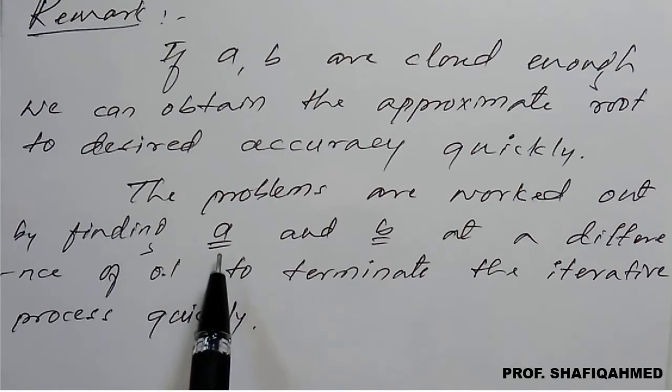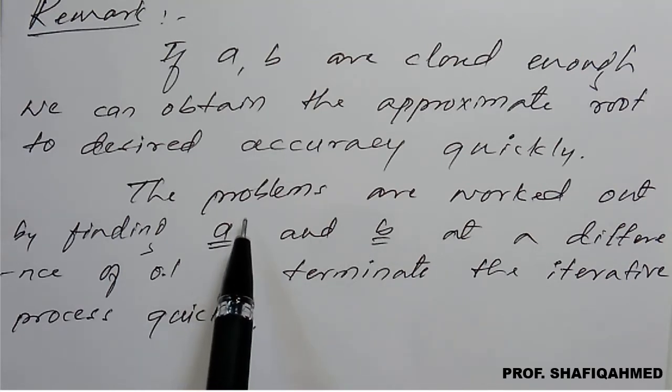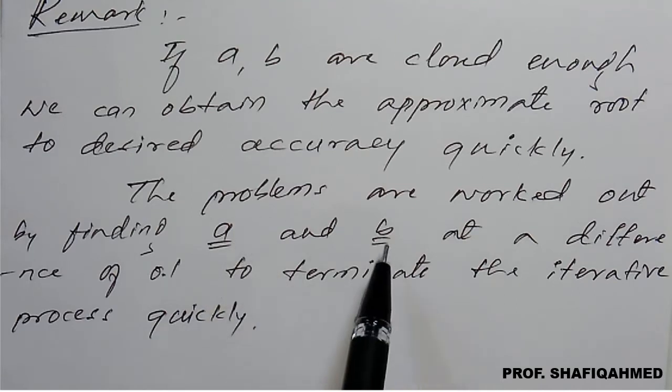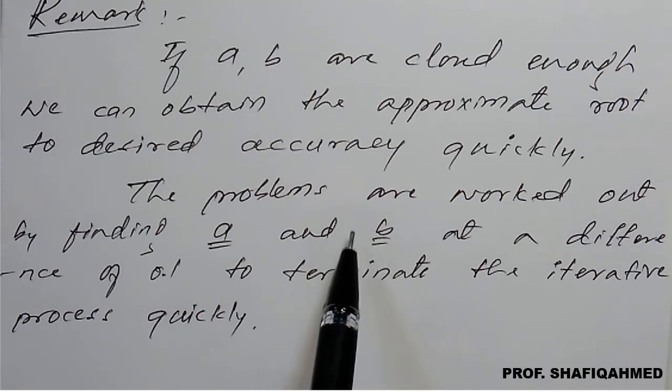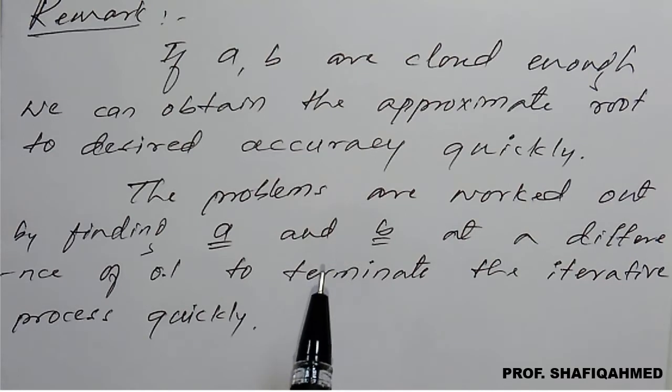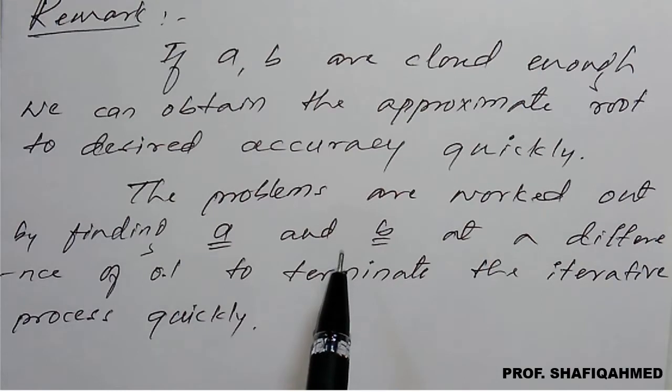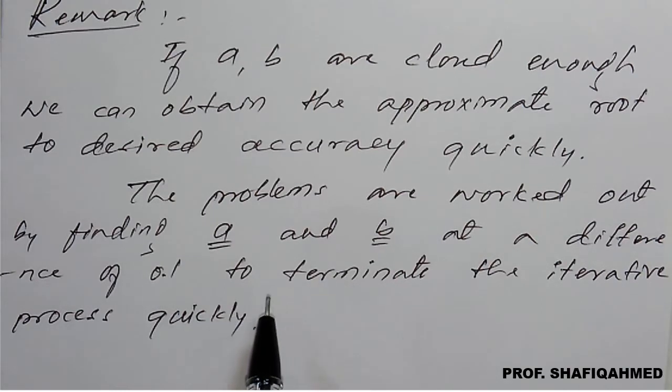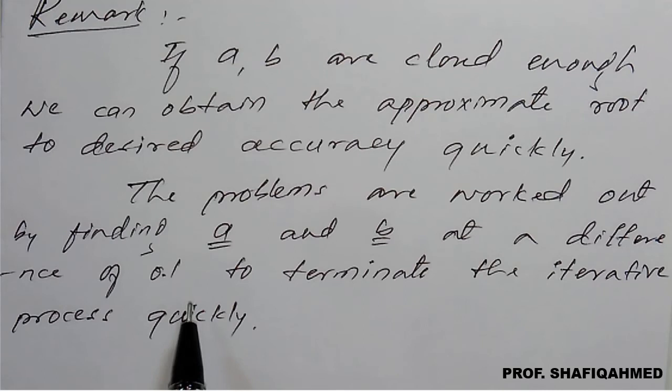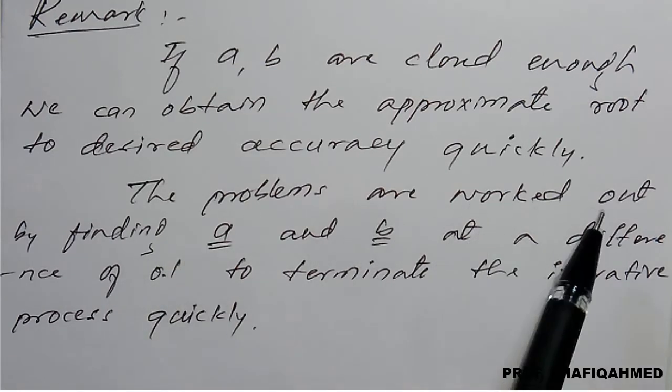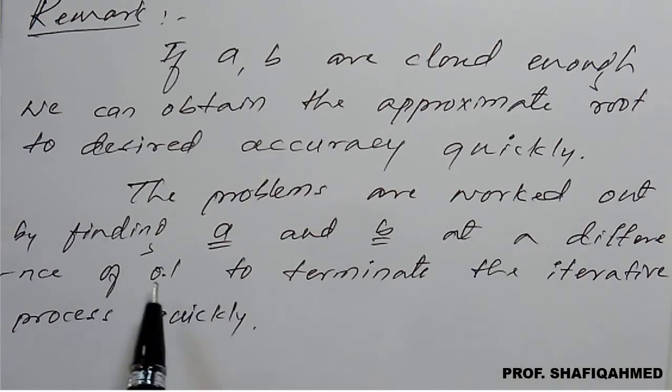So once we get again we need to check for example a value is 2 and b value is 3 so we need to check what is f of 2.1, 2.2, 2.3 and here reverse we have to come. If it is 3, b value is 3, then it is supposed to be 2.9, 2.8, 2.6 means one should be positive one should be negative so that value we have to see and we have to go forward here more accurate and less iteration.